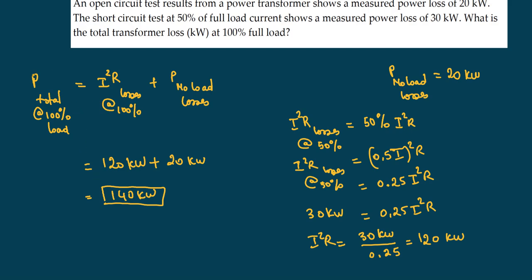This formula is definitely something you need to know — put it in your notebook. If given 75% or 25% or 50%, multiply by the square of that percentage to find the I²R losses. It's really important to understand that the base value is the actual full load losses, so any percentage can be applied to find losses at that load level. Let me know if you have any questions in the comments below.